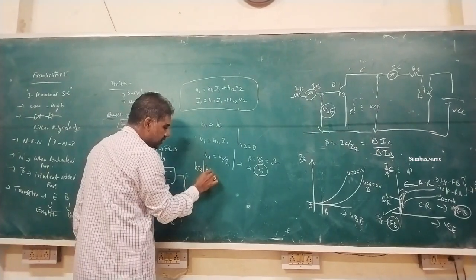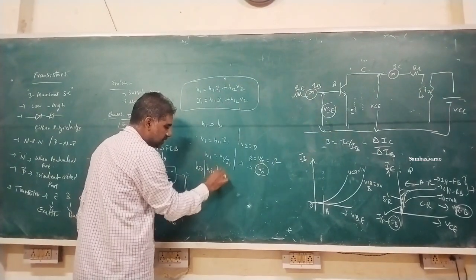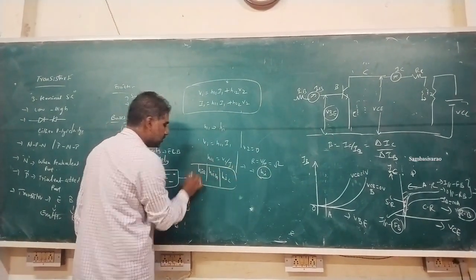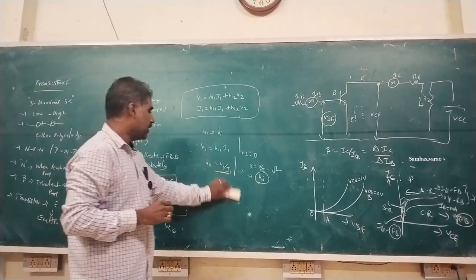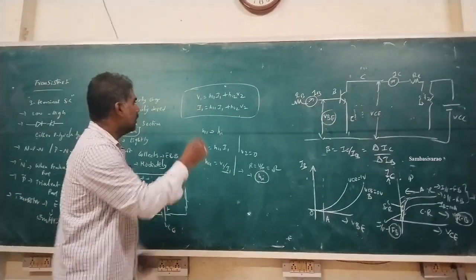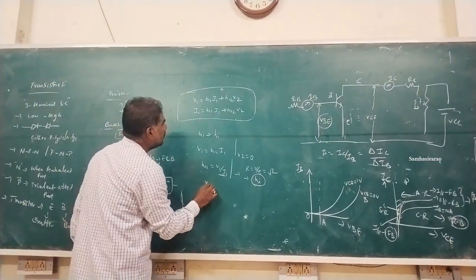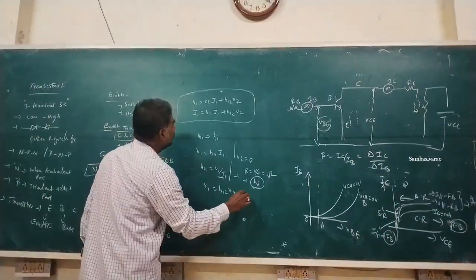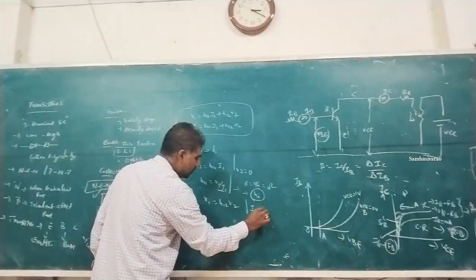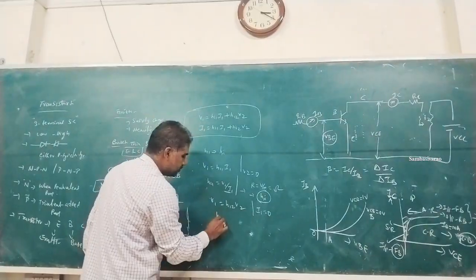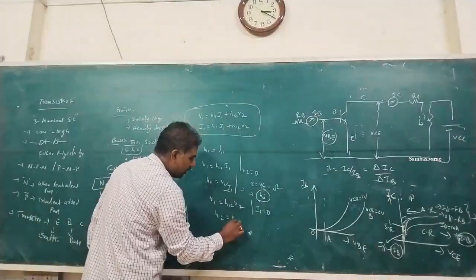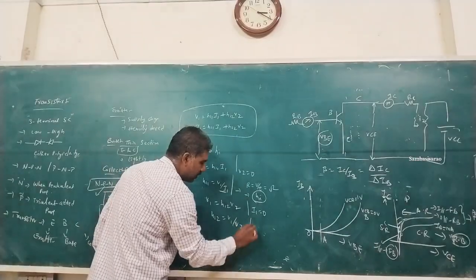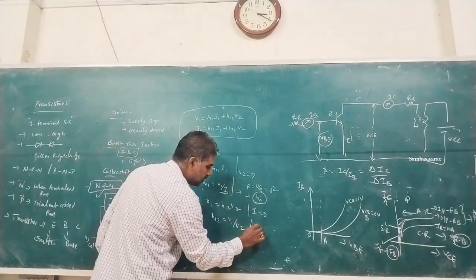HI is suffixed with E for emitter configuration, B for base configuration, and C for collector configuration. For H12, substituting I1 equal to zero: H12 = V1/V2.